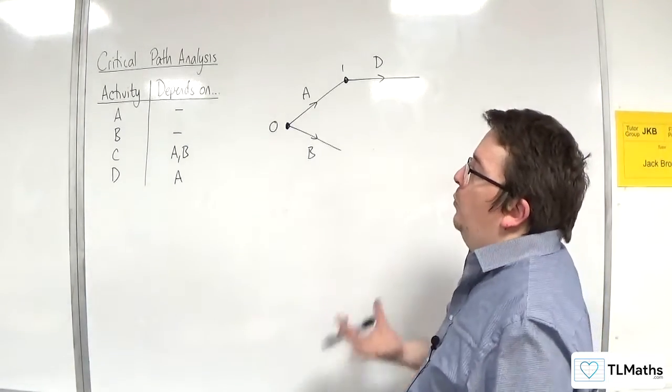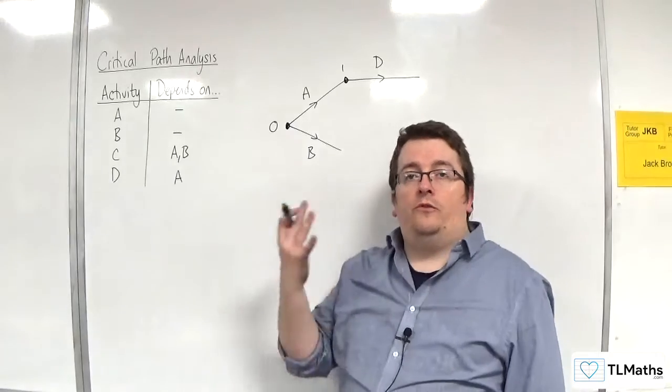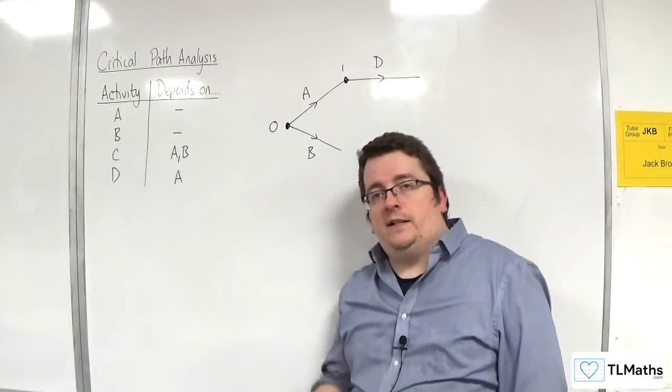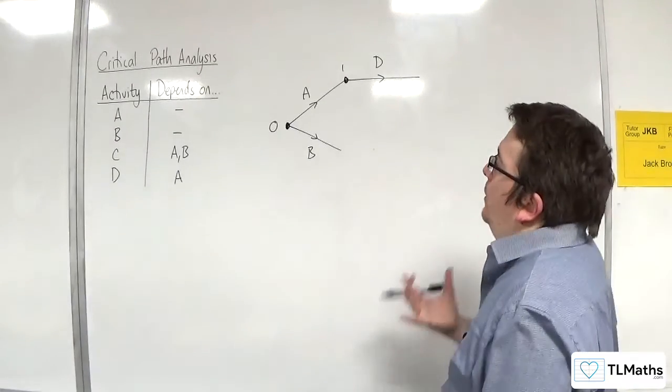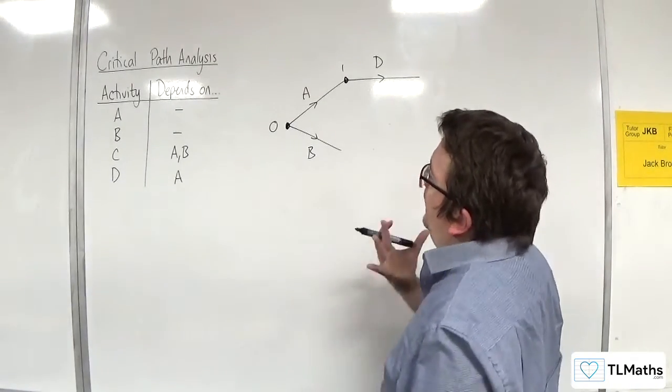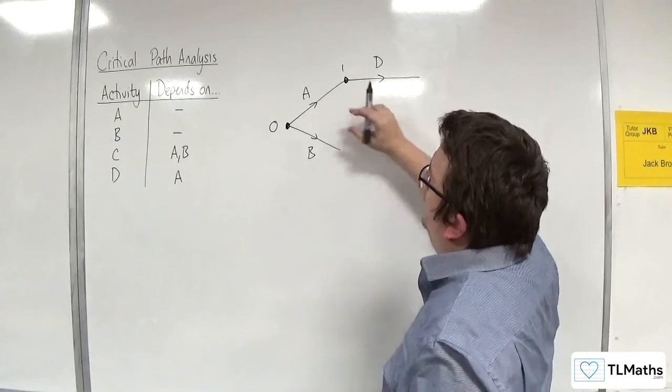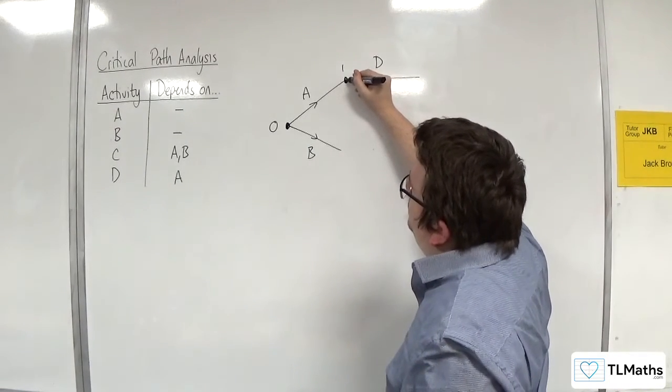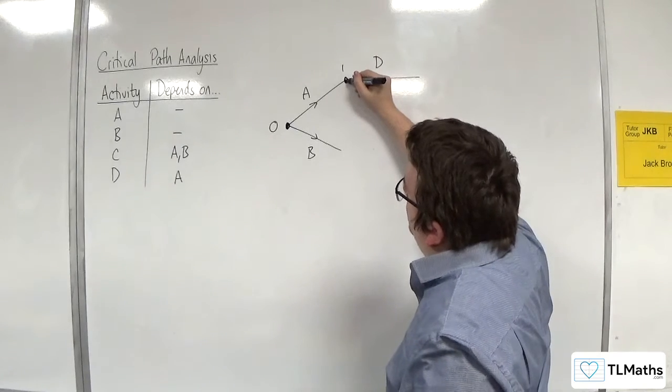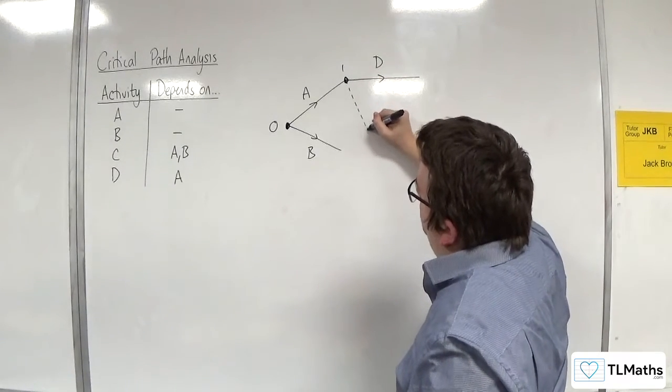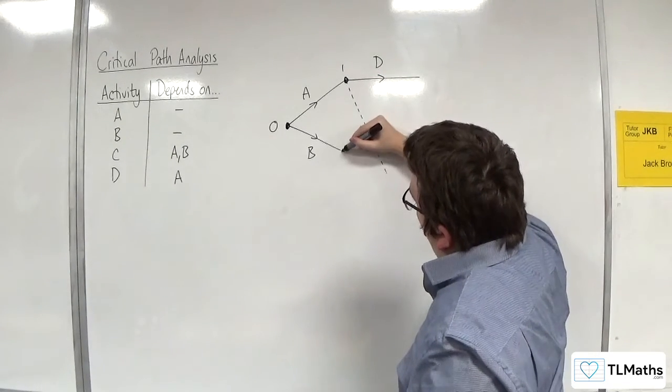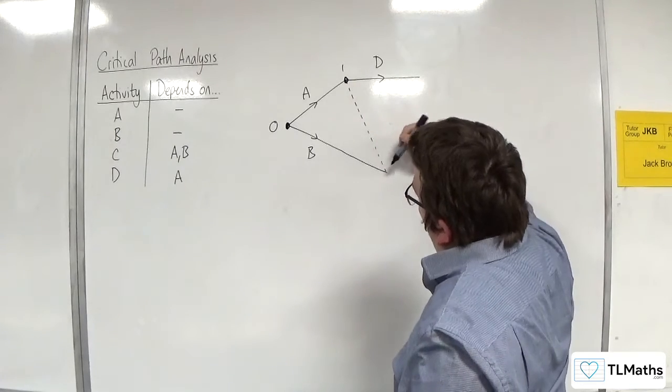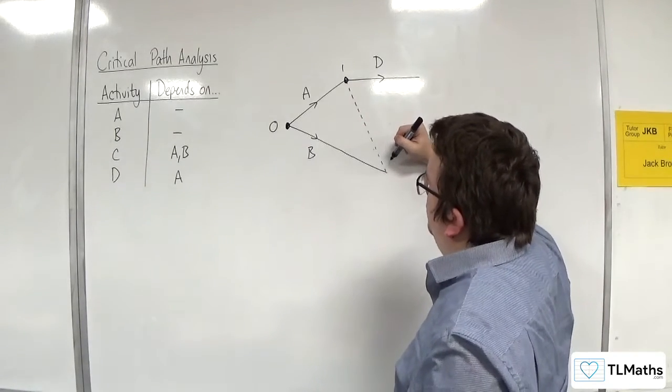So instead, what we introduce is what's referred to as a dummy activity. Now, a dummy activity essentially allows me to join up A and B. So from this event here, I'm going to draw a dashed line that will intersect with B, like so.